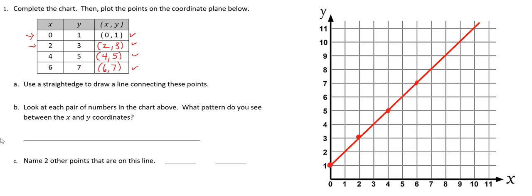And now, for part B, I'm going to look at each pair of numbers in the chart above and see what pattern there is between the x and y coordinate. So in the first ordered pair, I have 0, 1. In the second one, I have 2, 3. In the third one, I have 4, 5. And then 6, 7. So in each case, the y coordinate is one more than the x coordinate.